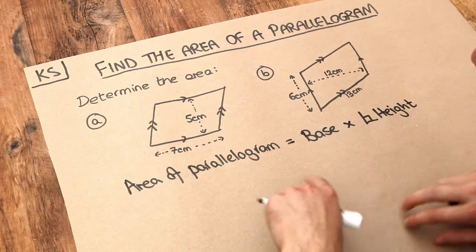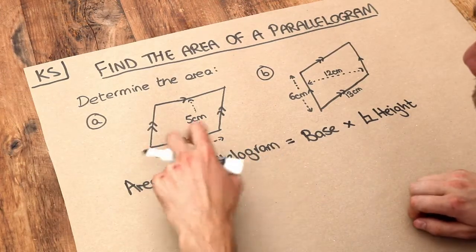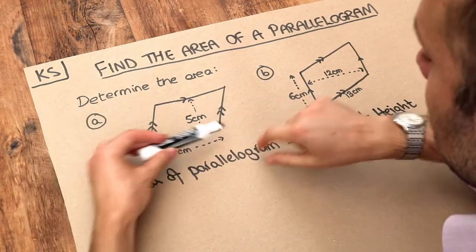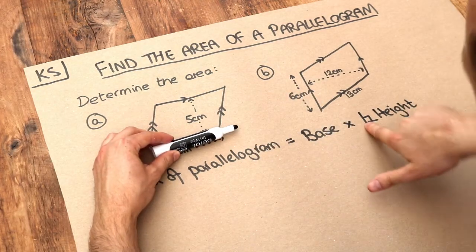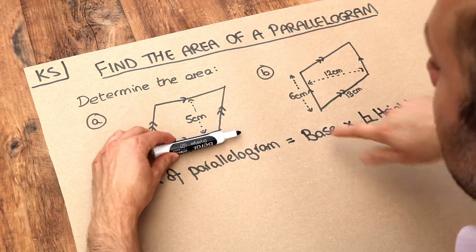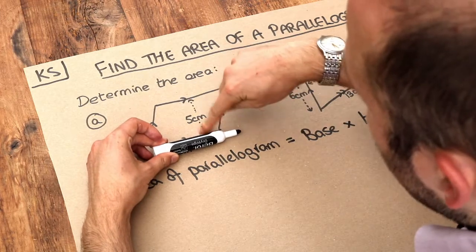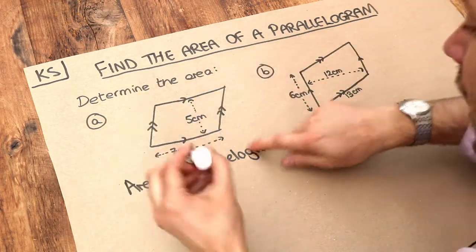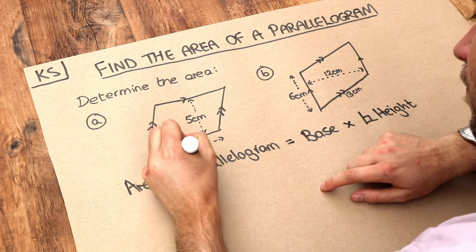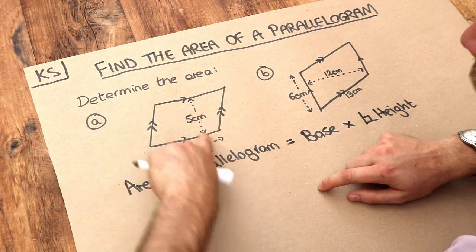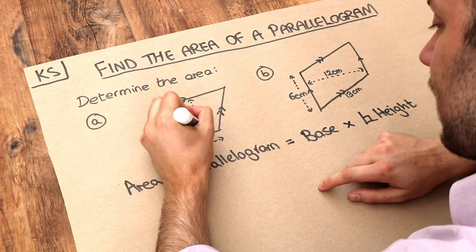Now whatever we consider to be the base of the shape, so let's just say that this length here was the base, then the perpendicular height, and that symbol just means perpendicular to, it means the height has to be at right angles to the base. So if that's the base here,